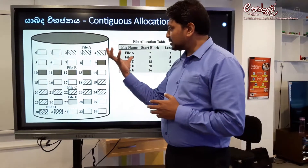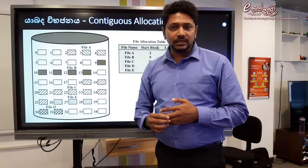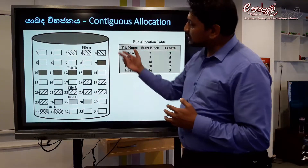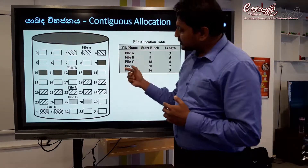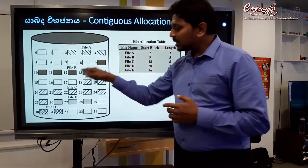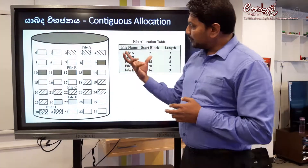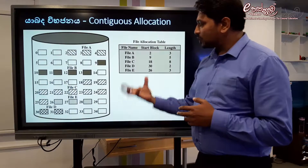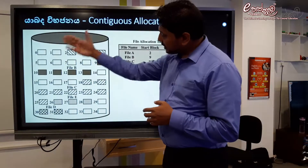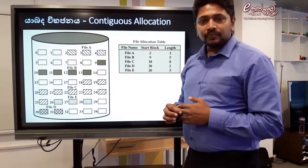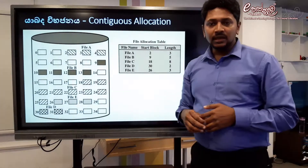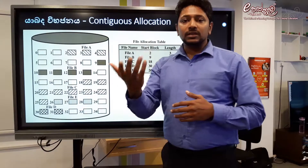This is a disadvantage of contiguous allocation. On a hard disk, if you save blocks, you may encounter external fragmentation. You can use defragmentation as an external fragmentation solution.